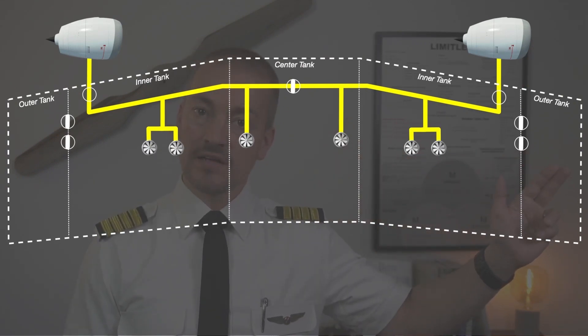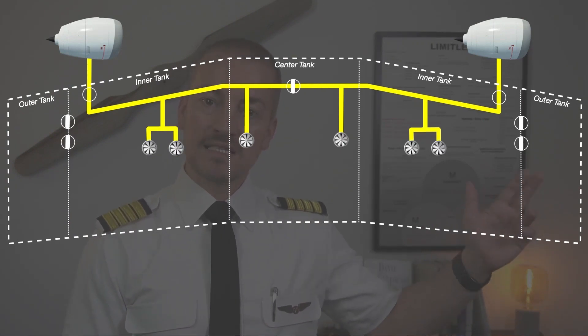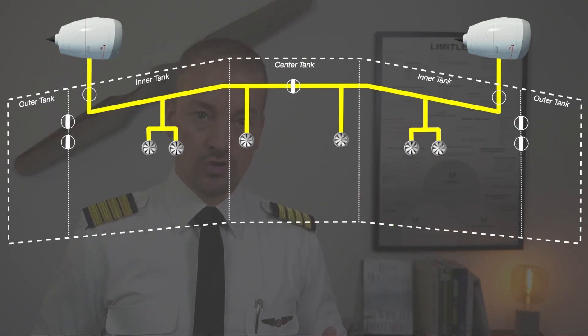As you can see right here, the outer tanks do not incorporate any fuel pumps. We are still able to hold fuel there and use it, but instead of providing fuel pumps, we provide transfer valves that at the right time will open allowing the fuel from the outer tank to flow into the inner tank to then be used.